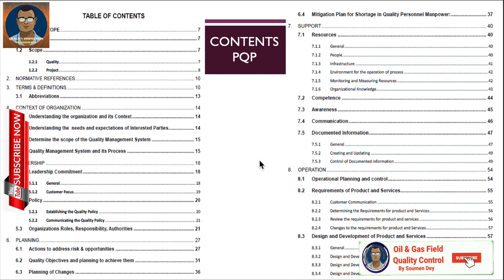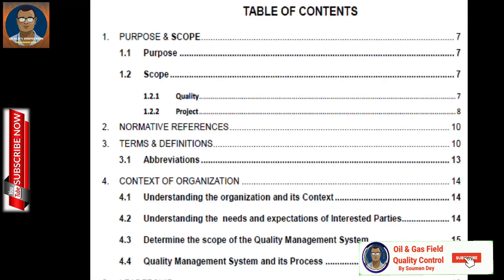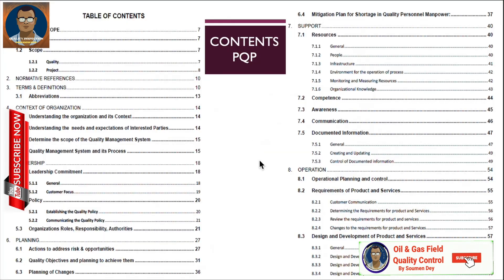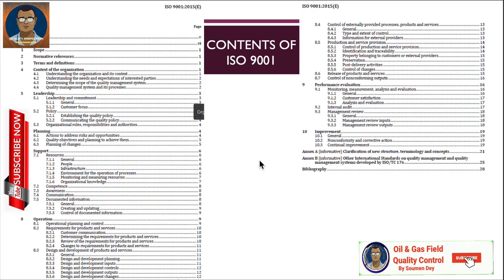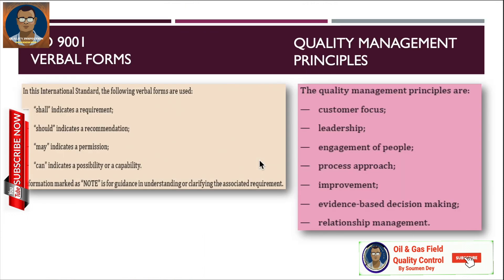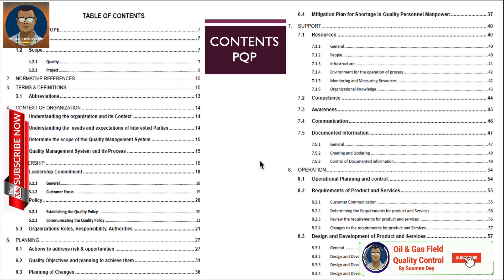You can see here a sample index from a project quality plan from one organization. Section 1 is purpose and scope, Section 2 is normative references, Section 3 is terms and definitions, and Section 4 covers the context of the organization. You can see it is similar to ISO 9001 contents.